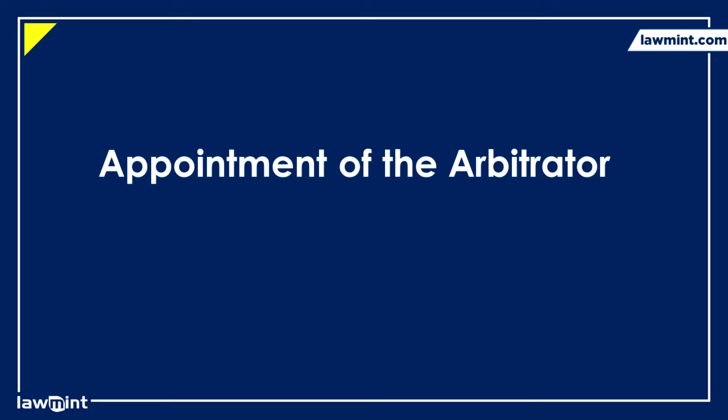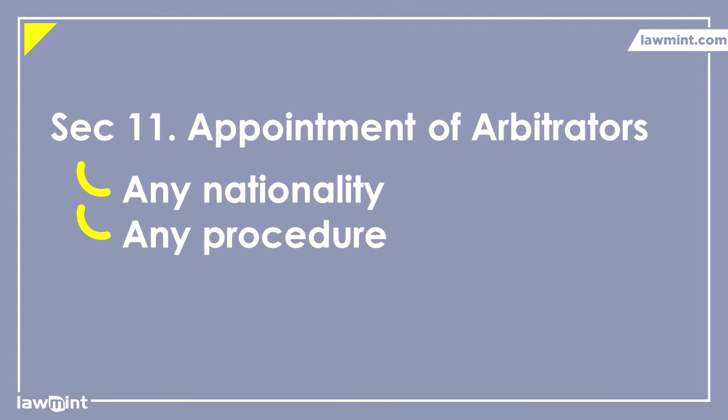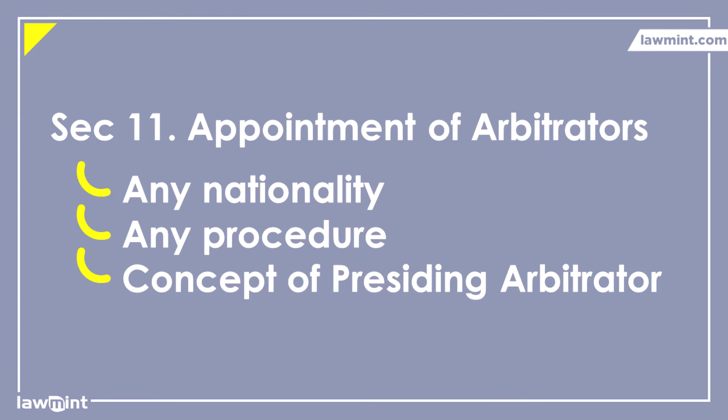Let us now talk about the appointment of the tribunal. The arbitrator or tribunal may be appointed in two ways: by the parties or by the court. Section 11 of the act deals with the appointment of the arbitrator and provides a lot of leeway to the parties to decide on who they want on the tribunal, as long as both parties agree beforehand. A person of any nationality can be an arbitrator. The parties can decide on any procedure for shortlisting, selecting, and appointing the tribunal. If the parties wish to have more than one arbitrator, both parties will appoint one arbitrator each, and those arbitrators will then mutually appoint a third person who will be the presiding arbitrator.